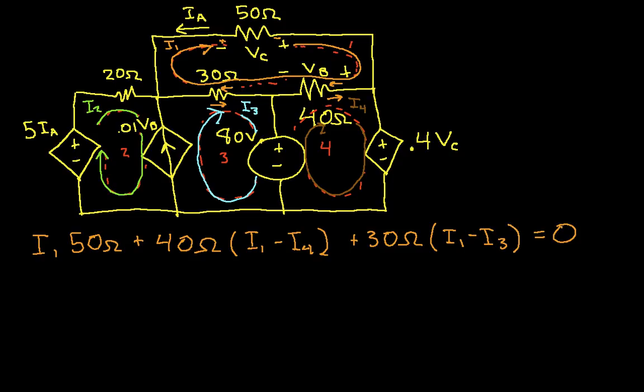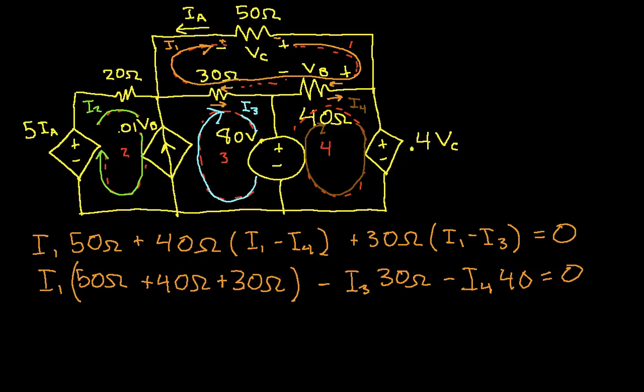We can simplify this a little bit to get that I1 times 50 ohms plus 40 ohms plus 30 ohms minus I3 times 30 ohms minus I4 times 40 ohms is equal to 0. Okay, so this represents our first equation. We got this by going around mesh 1.